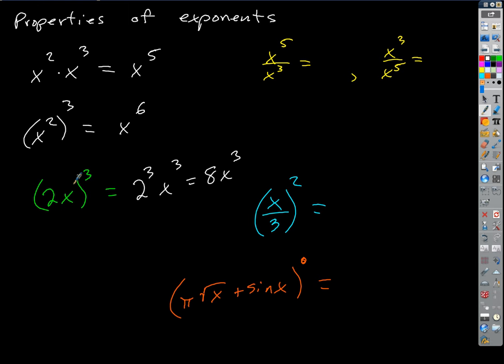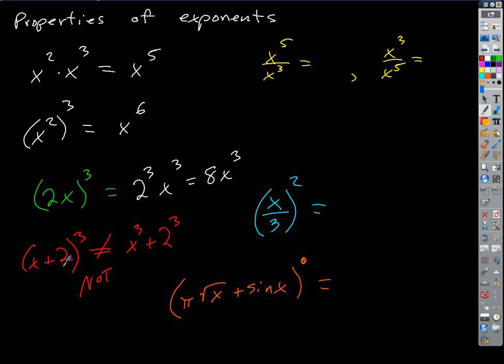That is very different from this, and I want to draw a very clear distinction here. If I have something like (X + 2) cubed, that is not equal to X cubed plus 2 cubed. I would have to do (X + 2) times (X + 2) times (X + 2). Just know that you cannot distribute when you're adding or subtracting — whether it's a plus or a minus, you can't distribute.